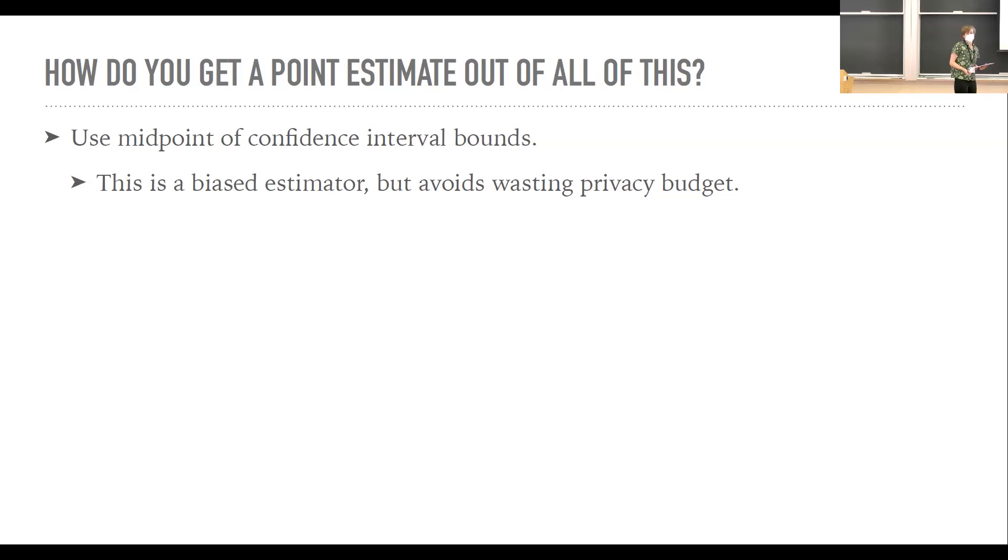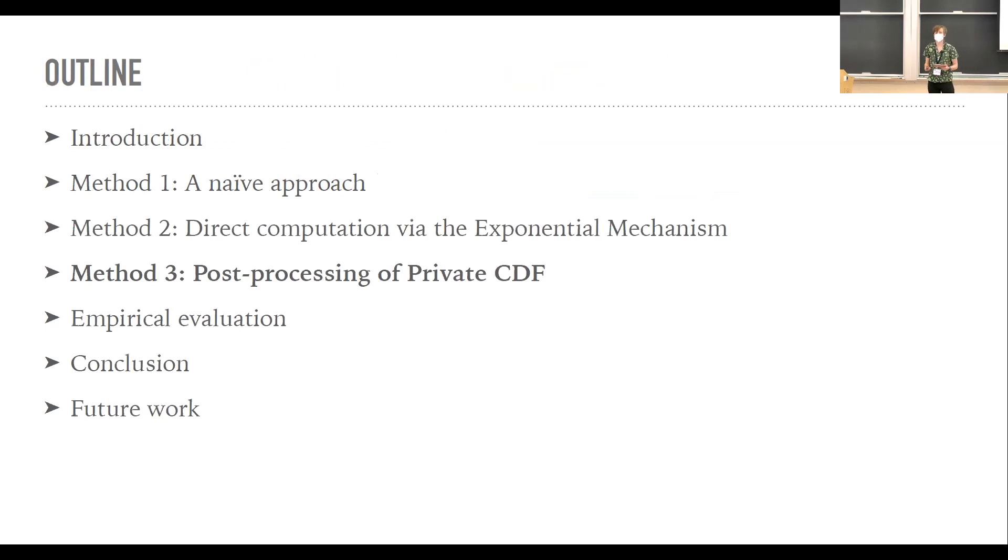So we don't get a point estimator of the median directly out of this. You can, if you want. We, in our work, we just use the midpoint of that confidence interval as an estimate. You could also sacrifice additional privacy budget and estimate that using the exponential mechanism or your mechanism of choice. We generally found that that wasn't a great idea. And if you've got a small privacy budget, it's better just to do this. That said, this is a biased estimator. So if you care a lot about bias, it might not be your best choice. And there's some open questions I'll get to towards the end that kind of loop back to this.